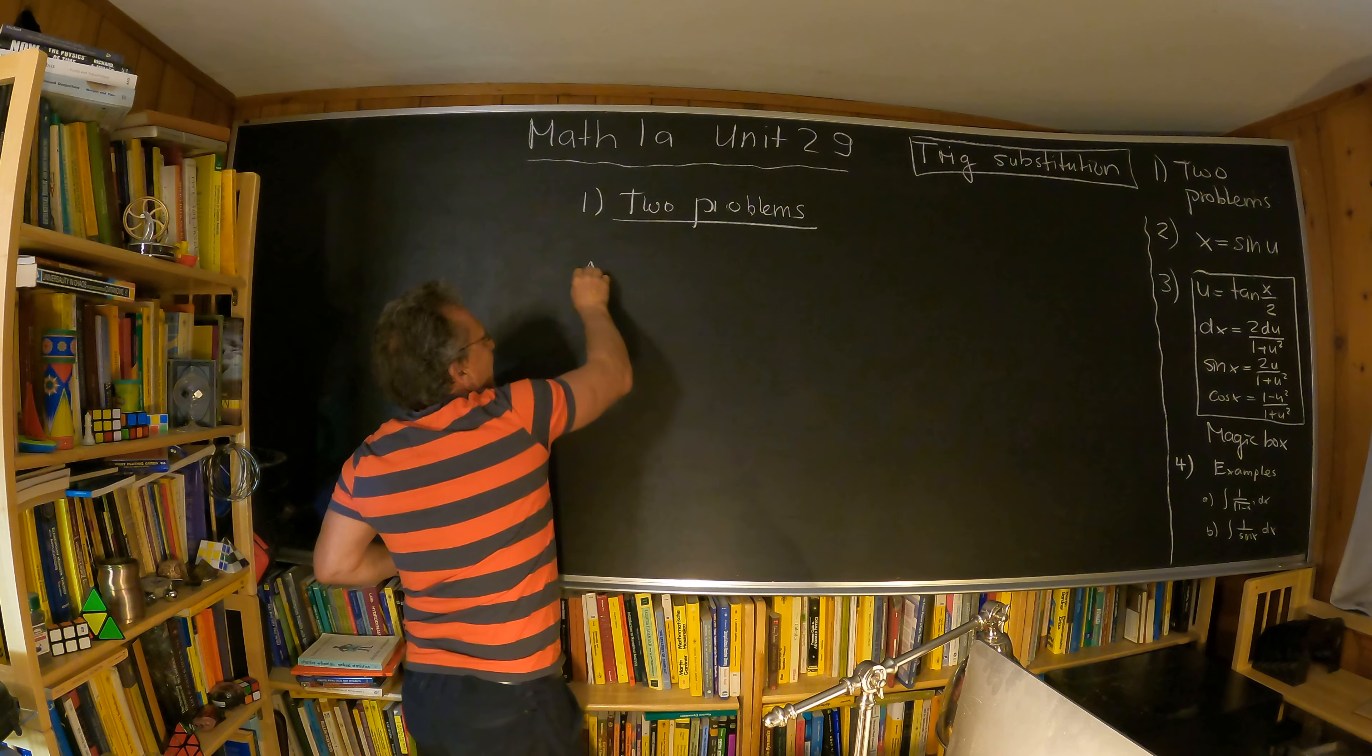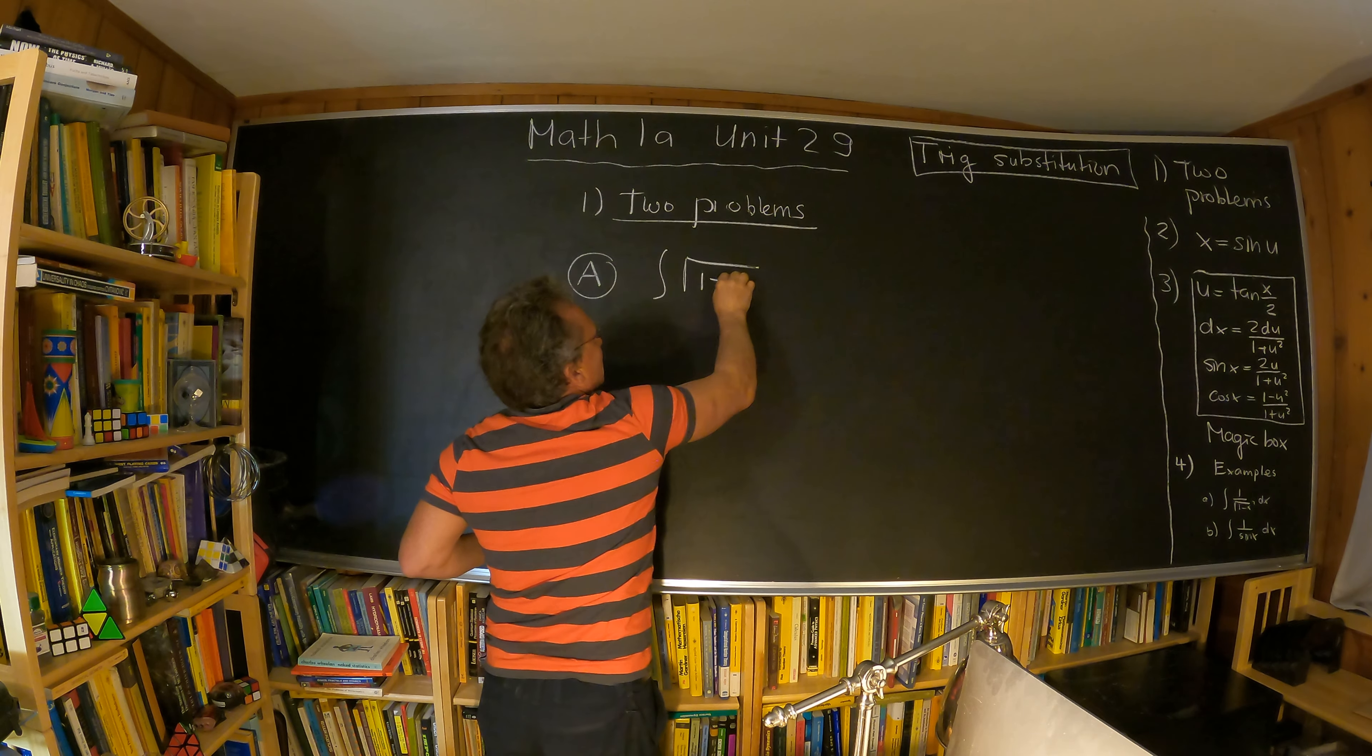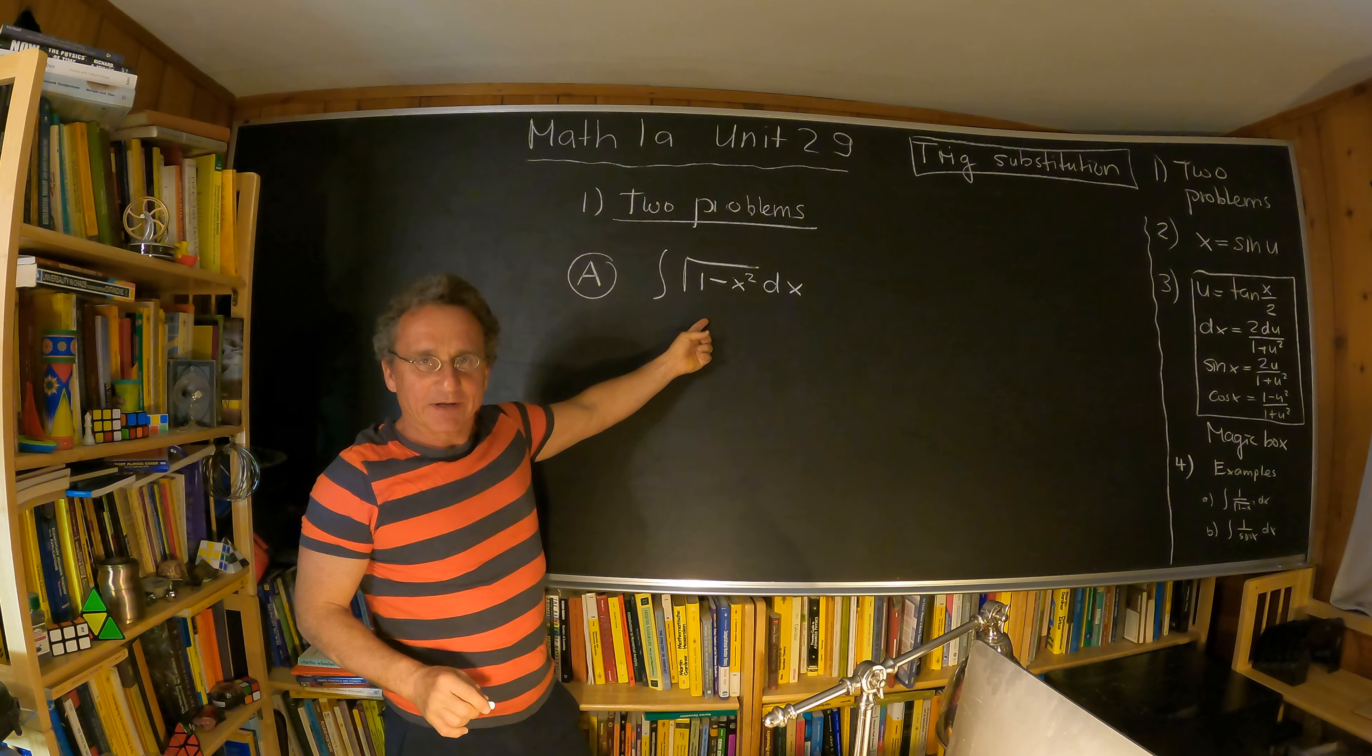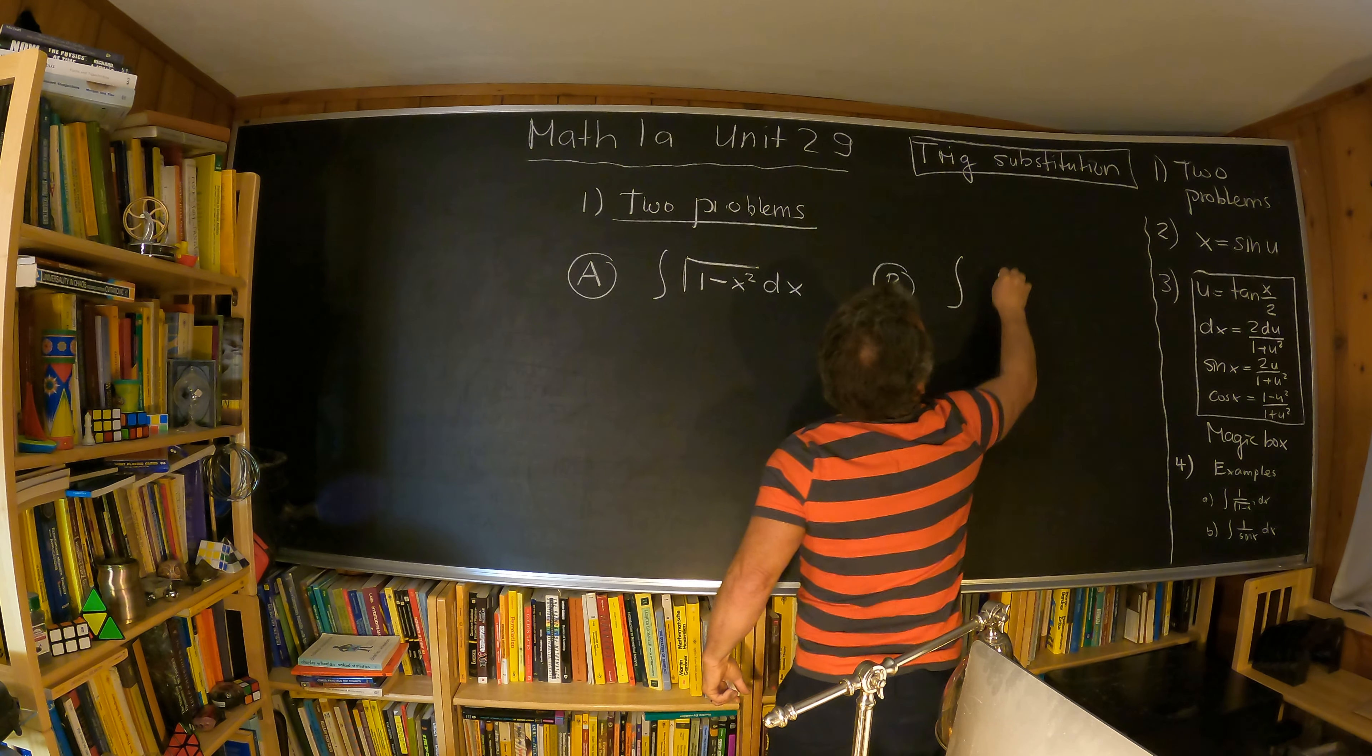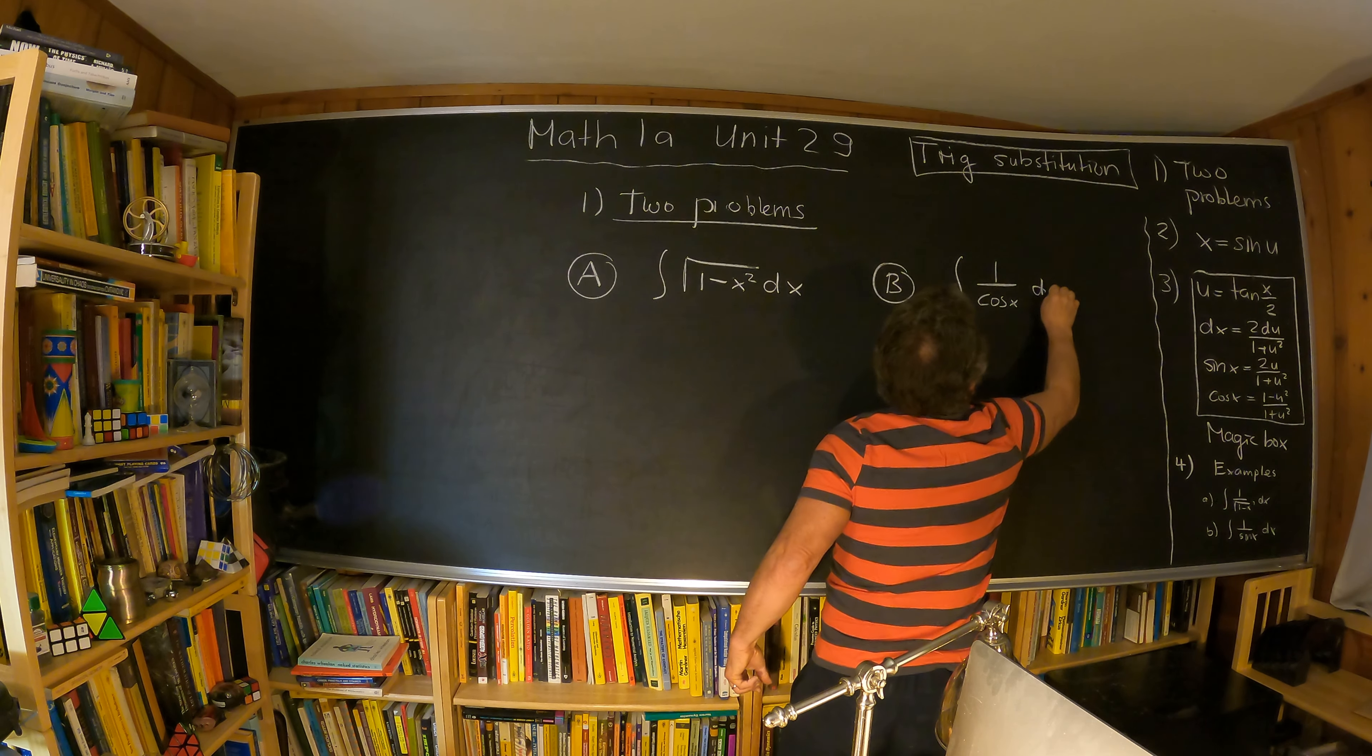We have problem A, the integral of square root of one minus x squared. That appears for example when you want to compute the area of a circle. And the second problem is the integral one over cosine x dx.